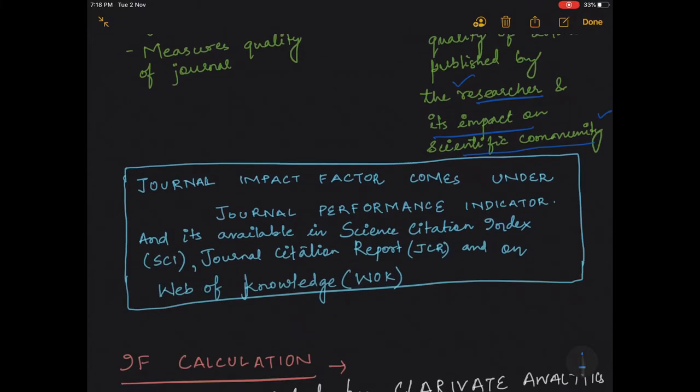So the journal impact factor comes under the journal performance indicator and it is available in Science Citation Index (SCI), Journal Citation Report (JCR), and on the Web of Knowledge.